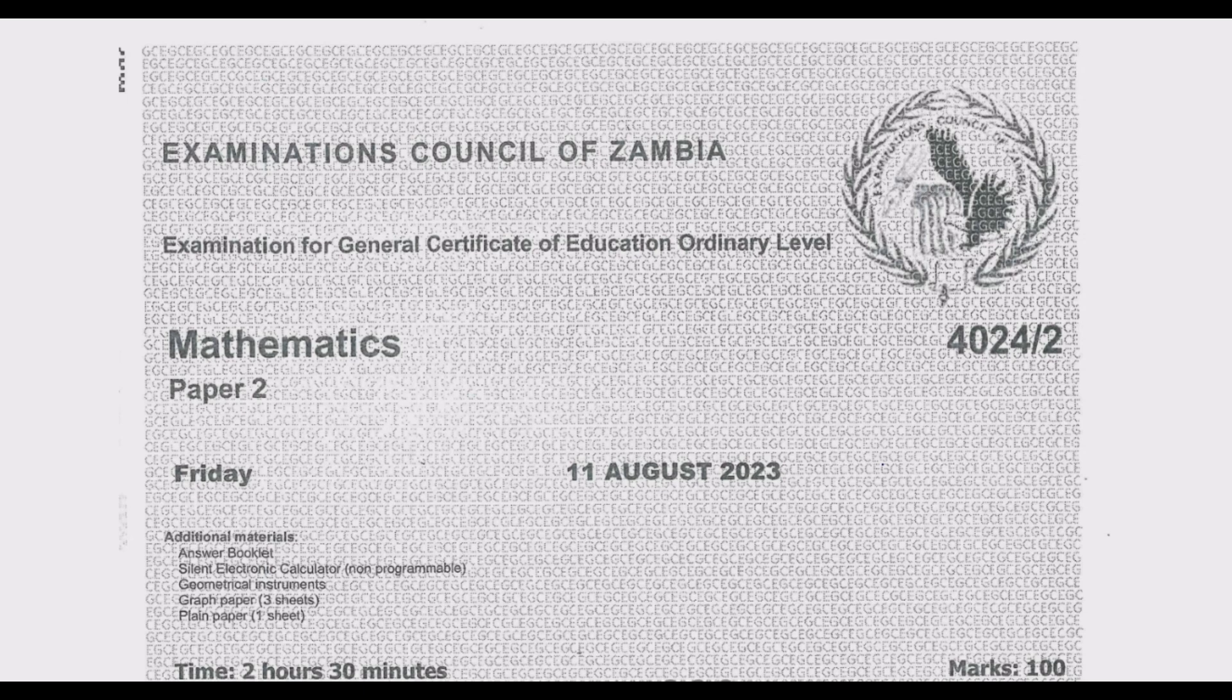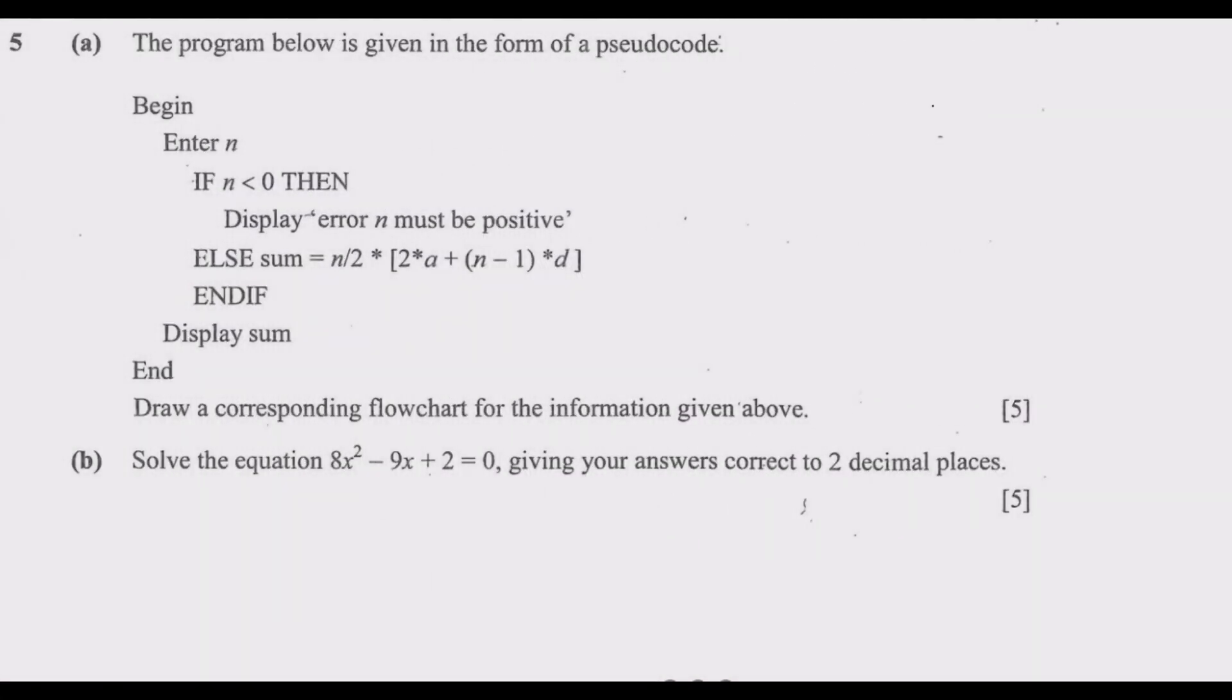Let us move straight to question 5. Question 5 part (a): The program below is given in the form of a pseudocode: begin, enter n, if n < 0 then display error "n must be positive", else find the sum over this function, endif, display sum, end. Draw a corresponding flowchart for the information given above.